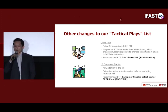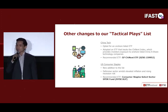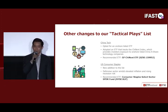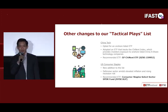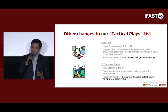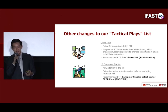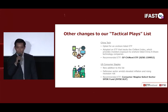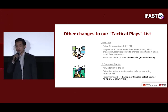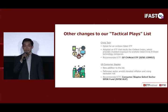Last but not least, US consumer staples is a new addition to our thematic place category. With elevated inflation and rising recession risk, we recommend investors adopt a more defensive stance. Goods from the consumer staples category should continue to enjoy steady demand even during a recession or emergencies such as the COVID-19 pandemic. Investors keen on this sector can invest via the Consumer Staples Select Sector ETF, ticker symbol XLP.